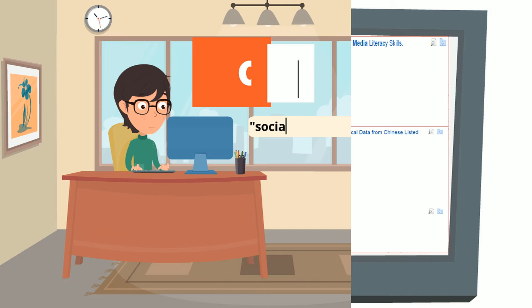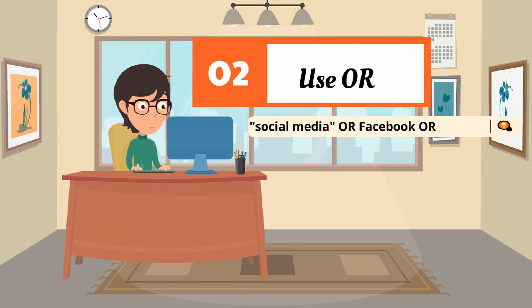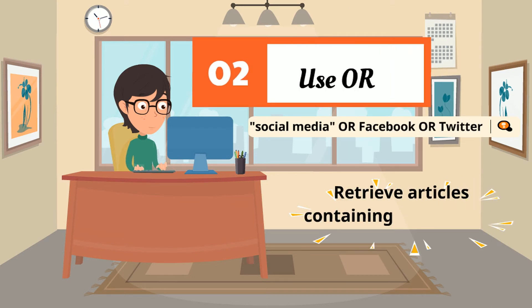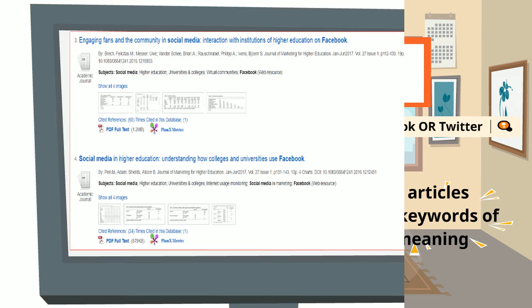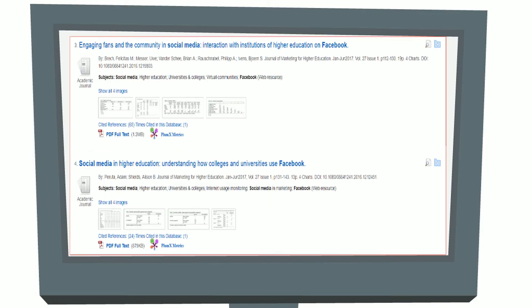Second, use OR to retrieve articles containing keywords of similar meaning. This will broaden your search results and retrieve documents containing either of your keywords.